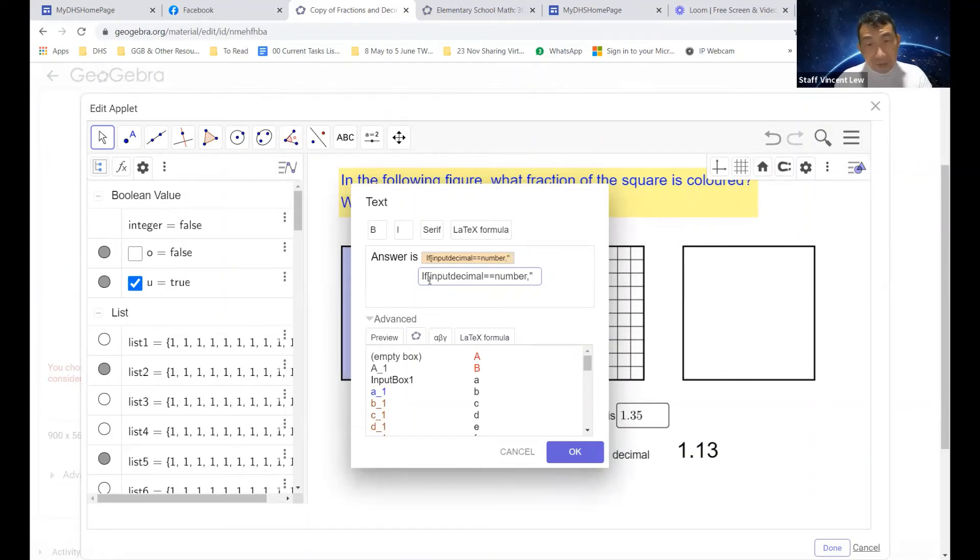And then if they are equal, then we say it's correct. We need a double quote because it's a string, it's a letter. Okay, comma. So that's if it is correct, if they are equal, then we say the answer is correct. If it is not true, then we're going to say the answer is wrong or incorrect. Close the bracket.